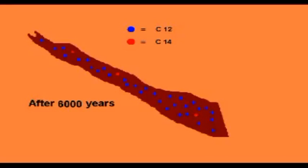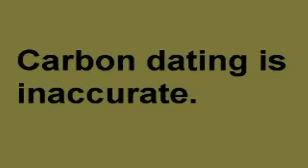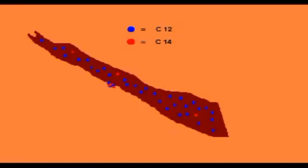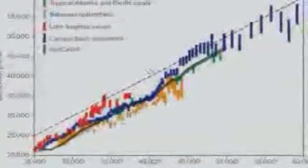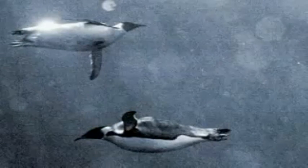Before looking at other dating techniques, let's address a few myths about carbon-14. Carbon dating works fine, but if the wrong stuff gets analysed, you'll end up getting the wrong date. So if there's bacteria, mould, or any kind of contamination on the sample, the date will be wrong. If the results aren't calibrated properly, the results will be wrong. And in some environments, carbon dating is impractical, so the results will be wrong.